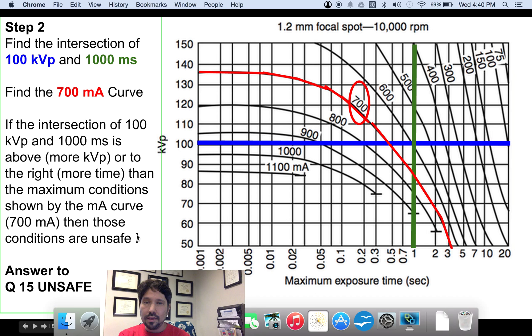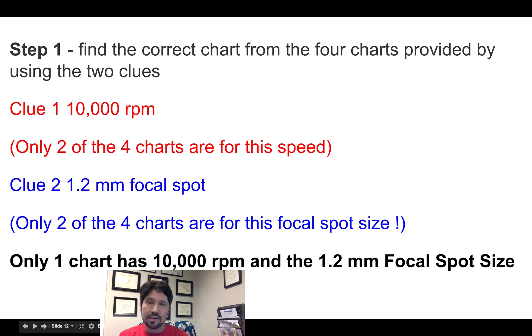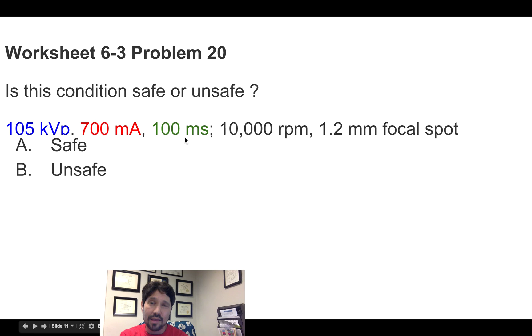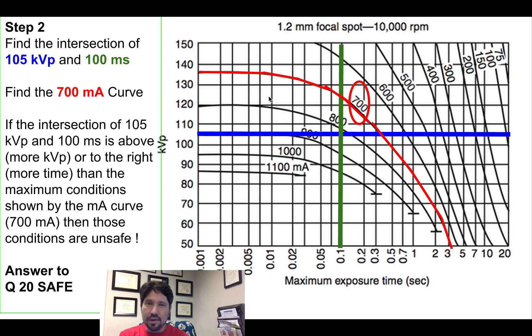Alright, we'll do one more. Again, it's the same RPM and the same focal spot. So we'll grab the same curve. And now we've got 105 kVp, 700 mA for 100 milliseconds. So we grab that same curve. We set up 105 kVp as my blue line. 0.1 second is 100 milliseconds. And that is below, it's to the left of the curve. It's below the curve. So at 0.1 milliseconds, I can go all the way to almost 125 kVp. Or at 105 kVp, I could go almost to 0.35 seconds. But as long as I don't go to the right of the curve, more time or above the curve, more kVp, I'm safe. So for this answer, I would be safe.